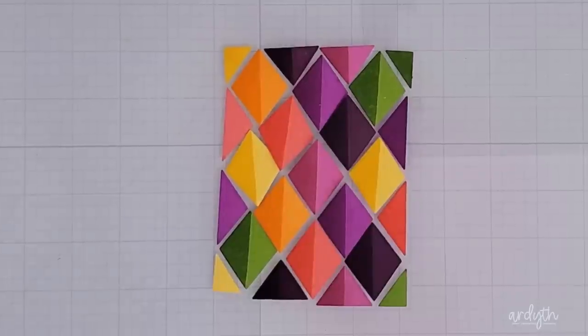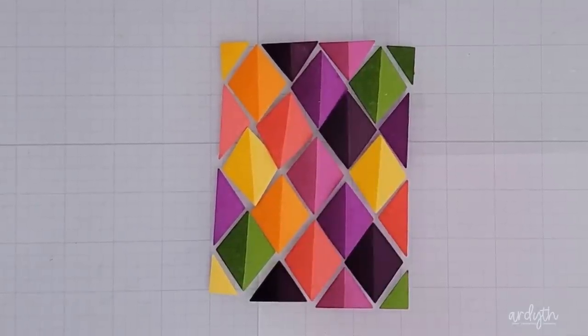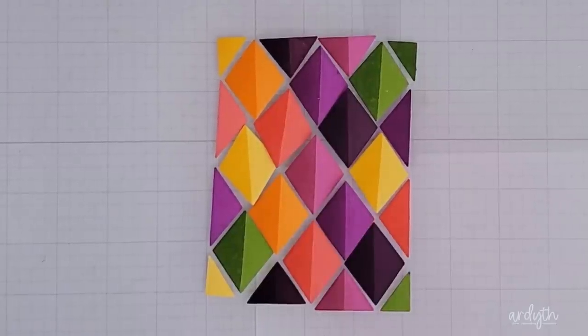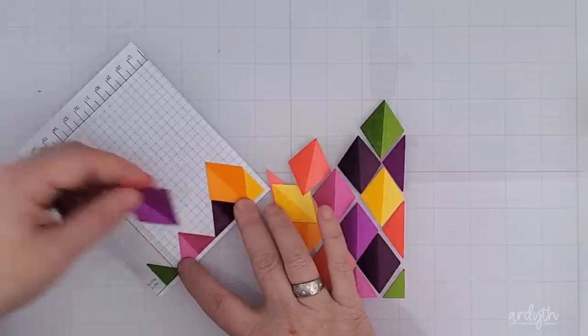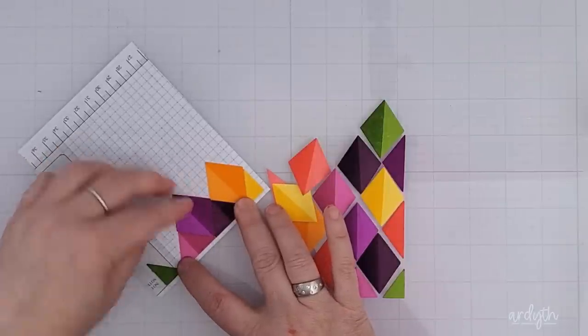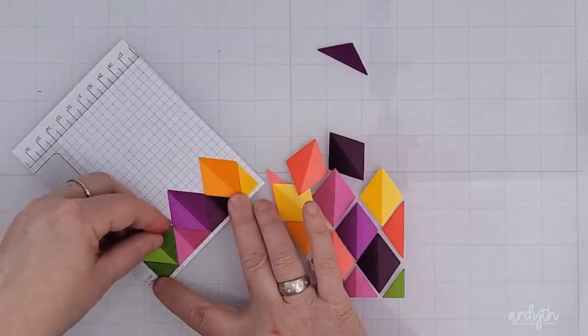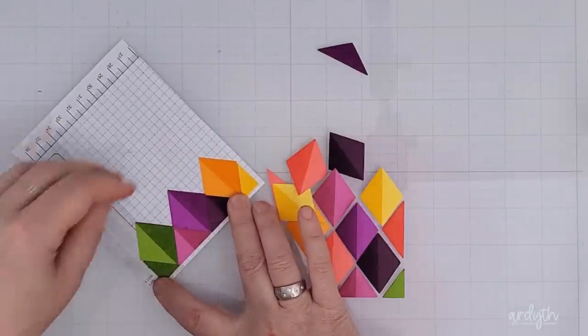I finished all the diamonds and then I used my picture to put them all back in place. See what I mean about that dimension? It's pretty cool, right? Next I added adhesive to a piece of scrap paper and I started placing my diamonds on it so I would be able to work with one panel rather than however many pieces there are here.